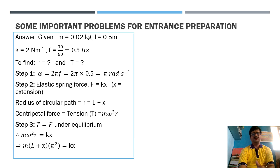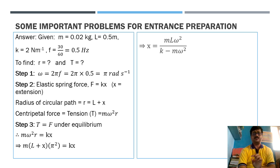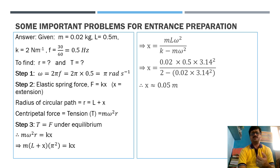Solving the equation, x equals m l omega squared divided by (k minus m omega squared). Substituting all values — mass, length, omega, and k — the extension x works out to approximately 0.05 meter (more precisely about 0.0498 meter, which we round to 0.05 meter).